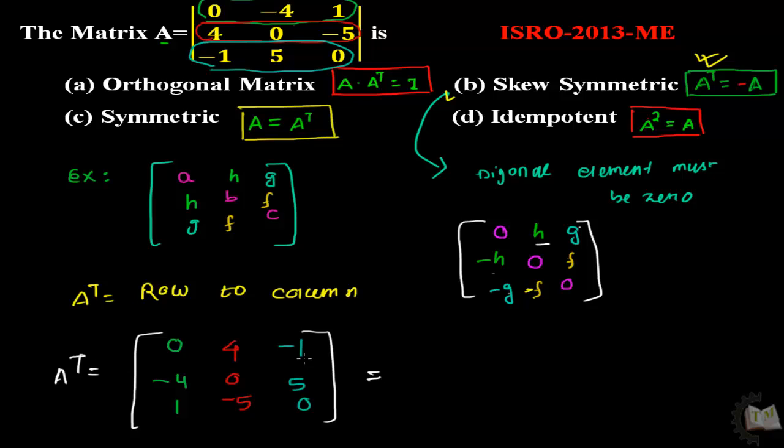This is the final transpose matrix. I am taking the negative common from the matrix and it will be 0, 4, -1, then -4, 0, 5, and then positive 1, -5, 0.